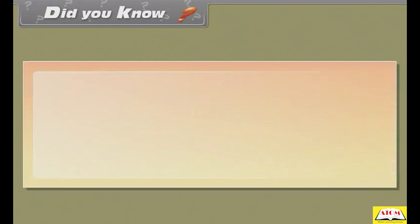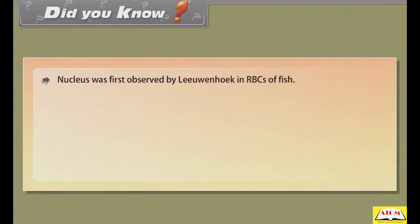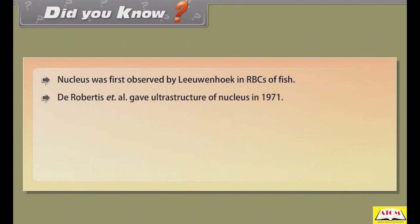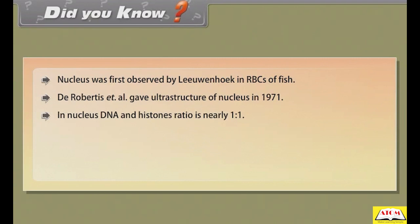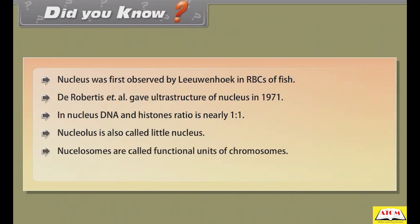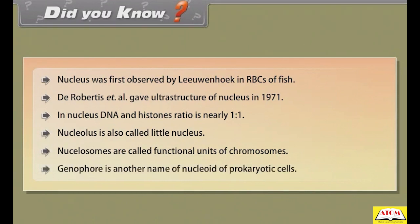Did you know: Nucleus was first observed by Leeuwenhoek in RBCs of fish. De Robertis et al. gave the ultrastructure of nucleus in 1971. In the nucleus, DNA and histones ratio is nearly 1:1. Nucleolus is also called 'little nucleus.' Nucleosomes are called functional units of chromosomes. Genophore is another name for the nucleoid of prokaryotic cells.